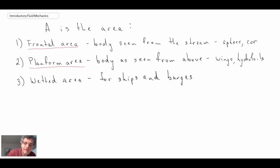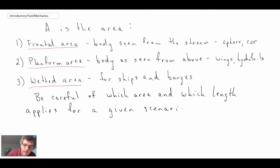A final area that could be used is wetted area, and that would be from a nautical application. For ships or barges, it would essentially refer to the component or the area of the ship that is in contact with liquid. The main point here is just to be careful in terms of understanding what length or area has been used to produce the drag coefficient data that you might be using.